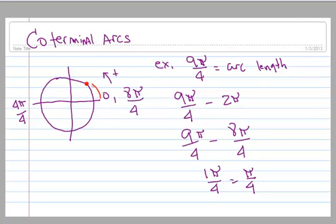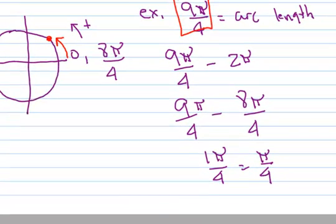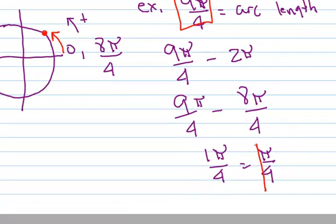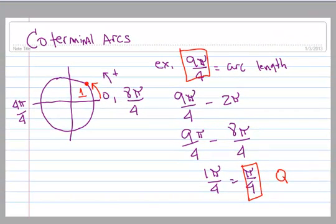So that's right here. So you can say that the coterminal arc for 9π over 4 is the same as π over 4. Those are coterminal arcs. And then a question might also ask you what quadrant are you in. Well after you do this then you can see you're in quadrant 1.